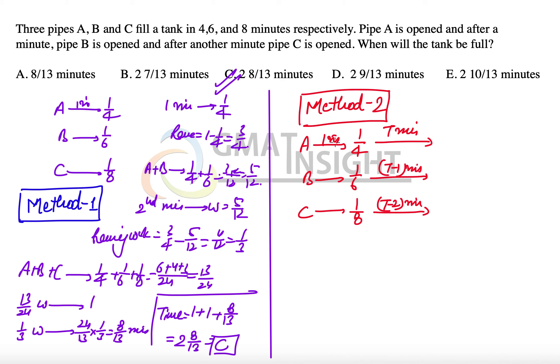That means A's total work will be T/4. B's total work for T minus 1 minute will be (T minus 1)/6. And C's total work will be (T minus 2)/8. And now we can say that T/4 plus (T minus 1)/6 plus (T minus 2)/8 should be equal to 1. And if we simplify this, we are getting the answer as 2 whole number 8/13 or 34/13 which is same C option as an answer.